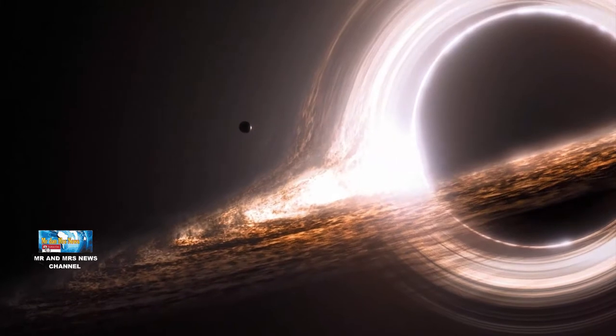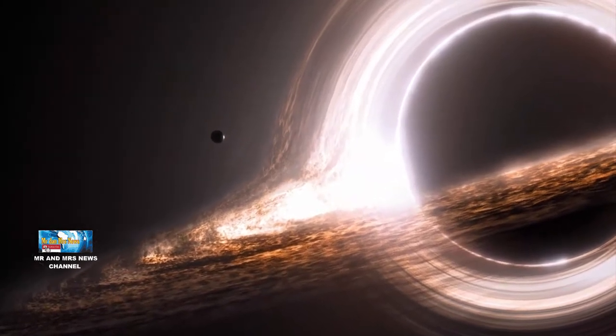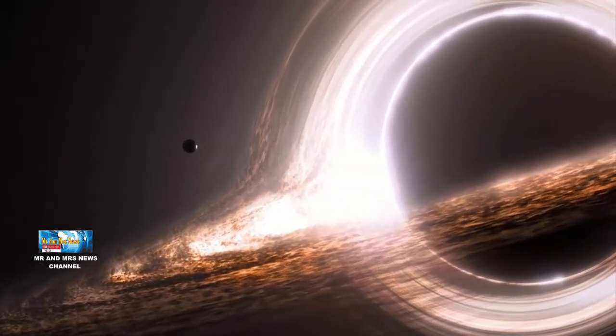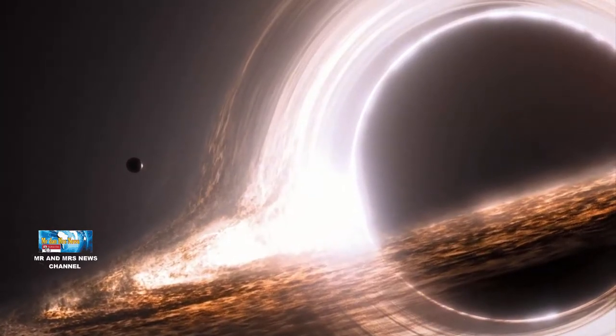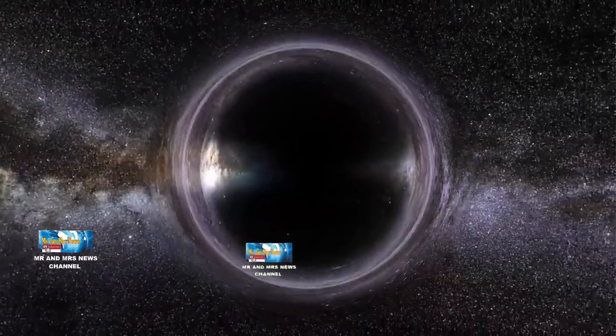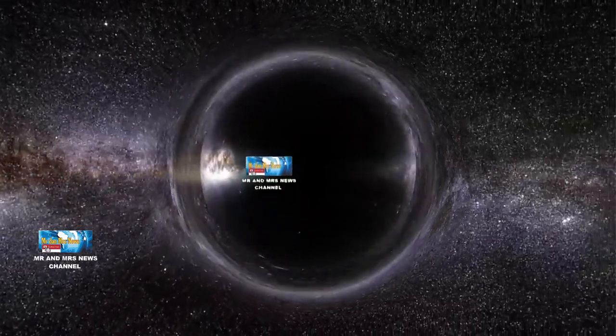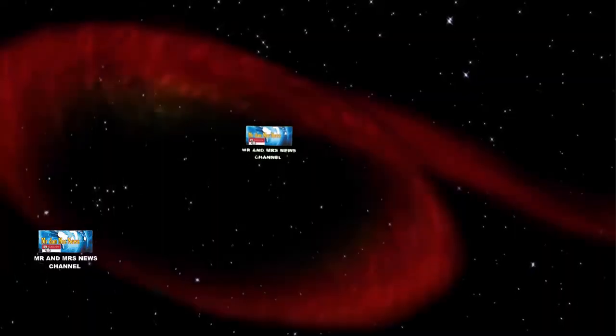Black Hole raksasa dipercaya ada di pusat galaksi. Teori ini datang dari mempelajari gerak bintang yang mengelilingi pusat galaksi. Geraknya tidak bisa tidak mengikuti hukum Kepler. Hasil kajian menunjukkan ada objek yang sangat masif, dan hanya bisa diperkirakan sebagai Black Hole.